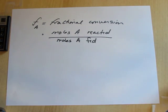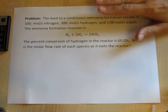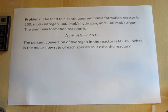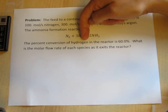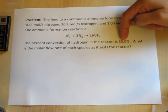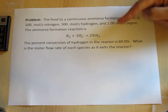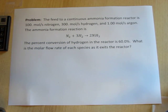To see how extent of reaction works in a problem, we have an ammonia reaction problem to consider. The feed to a continuous ammonia formation reactor is 100 moles per second nitrogen, 300 moles per second hydrogen, and 1 mole per second argon. The formation reaction is as we saw previously, and the fractional conversion of hydrogen is 60%, or 0.6. The question asks: what is the molar flow rate of each species as it exits the reactor?